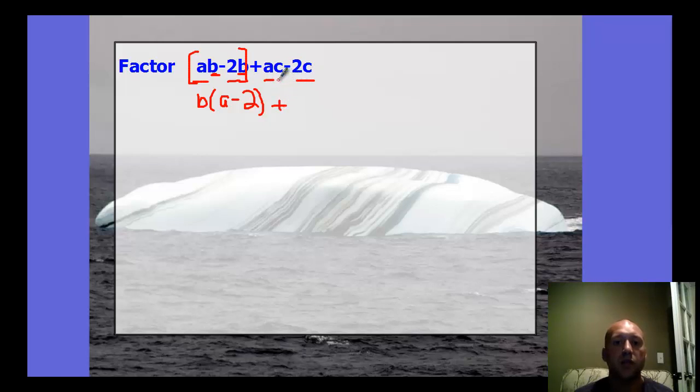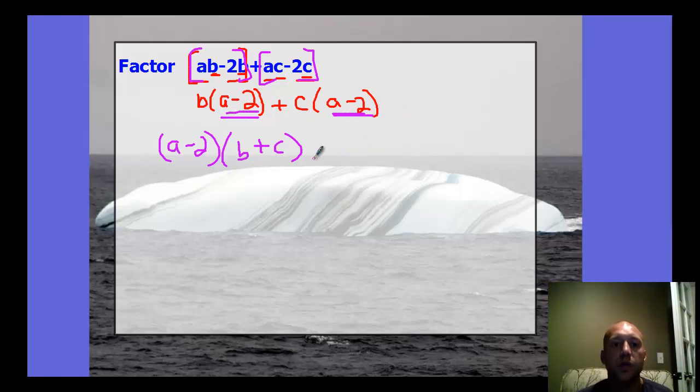Plus, I can do the same thing over here. These both have a C. So if I factor a C, I'm left with A minus 2. Notice after you factor out those terms, this group ends up being the same, A minus 2. So I can factor out the A minus 2, and I'm left with B plus C. If you factor by grouping, you first need to group together two terms, factor out a common factor which gives you the same group, then factor out the group. Now you have two binomials being multiplied together.